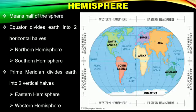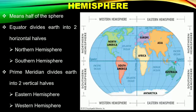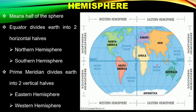We have learned about Equator and Prime Meridian. Now see in the figure. The Equator is dividing the Earth into two halves — Northern Hemisphere and Southern Hemisphere. And the Prime Meridian is dividing the Earth into two vertical halves — Eastern Hemisphere and Western Hemisphere. Students, I hope you can now identify the horizontal and vertical hemispheres on the globe.